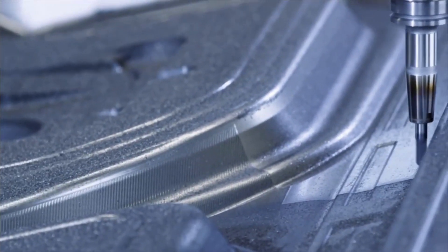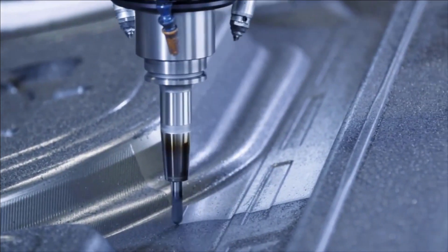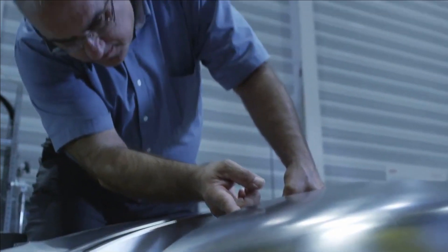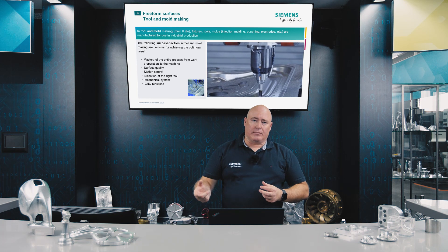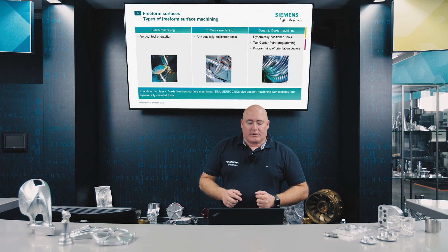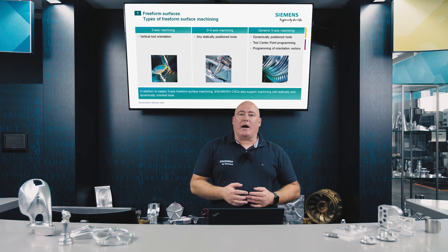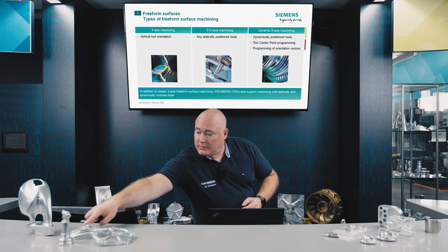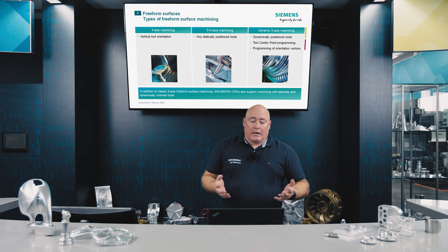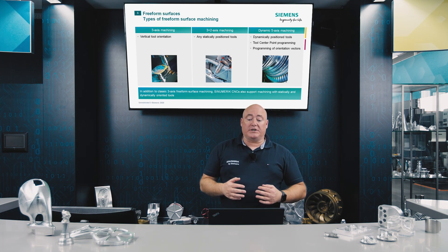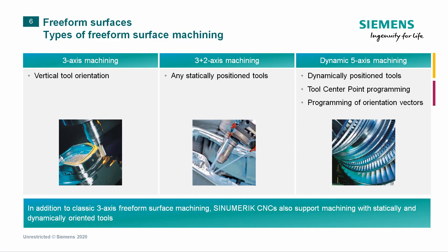There are various ways of producing freeform surfaces, with the focus on achieving a very precise surface. They are mostly negatives of the component to be produced. You can produce very good freeform surfaces with 3-axis machining. 3+2 kinematics provide better results and greater flexibility, and dynamic 5-axis machining allows undercuts of any shape and position.